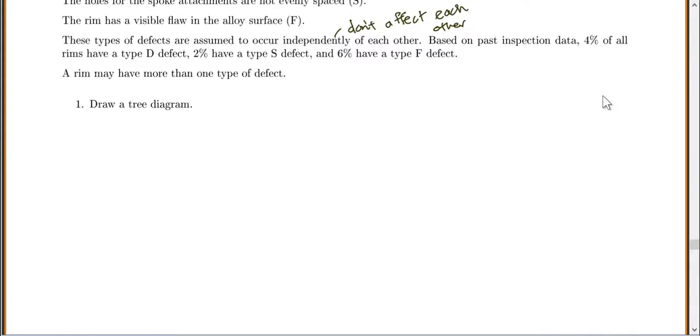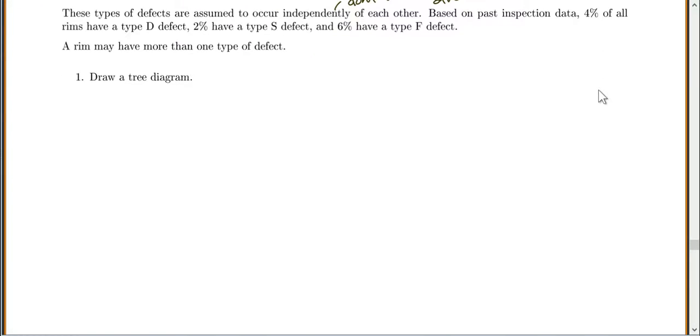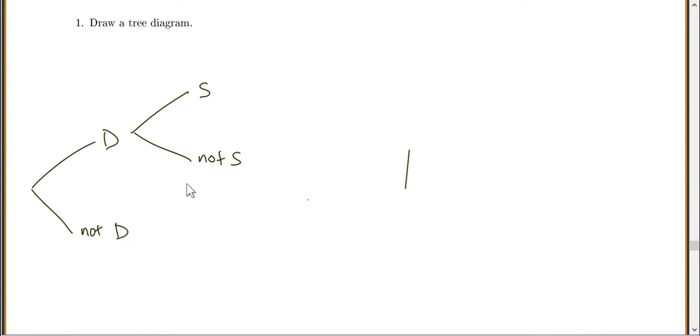If we were to draw a tree diagram, I'd start off and could either have a D defect or not D. Then whether or not I have a D defect, I could also have an S defect or not S. Similarly, I could still have an S or not S with not D. Then I could have an F defect or not F for all branches.